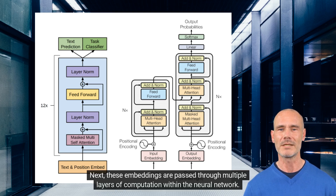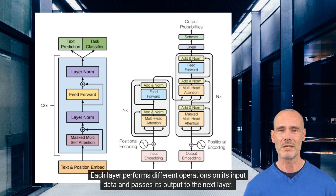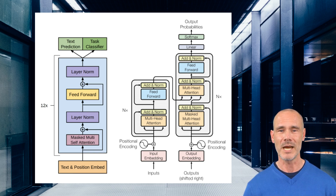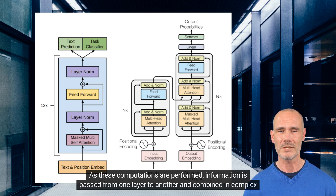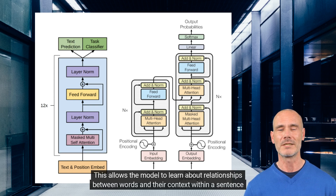Next, these embeddings are passed through multiple layers of computation within the neural network. Each layer performs different operations on its input data and passes its output to the next layer. These operations can involve things like matrix multiplication or applying nonlinear functions. As these computations are performed, information is passed from one layer to another and combined in complex ways. This allows the model to learn about relationships between words and their context within a sentence or paragraph.